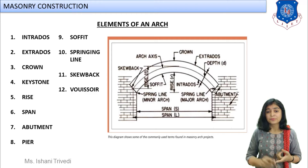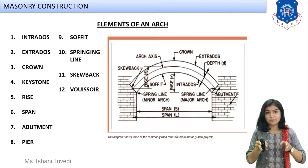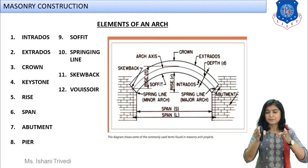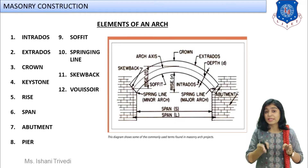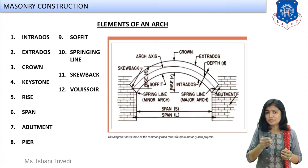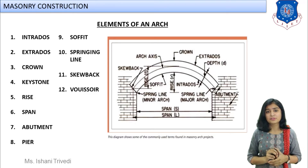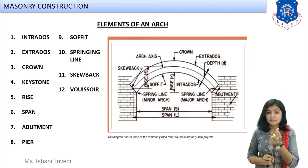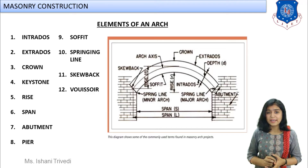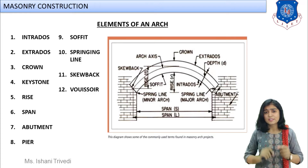The two supports at the extreme ends of the arch are known as abutments. When the span is long and intermediate supports are needed, those intermediate supports are known as piers. The soffit is the underneath side width of the arch. The springing line is the imaginary line joining the keystones on both sides.